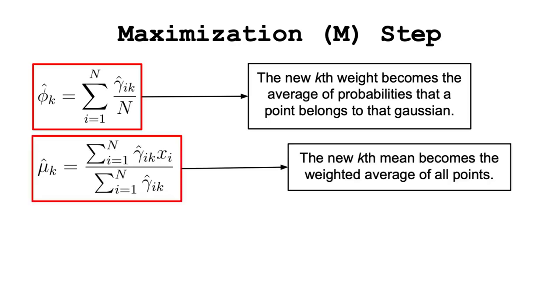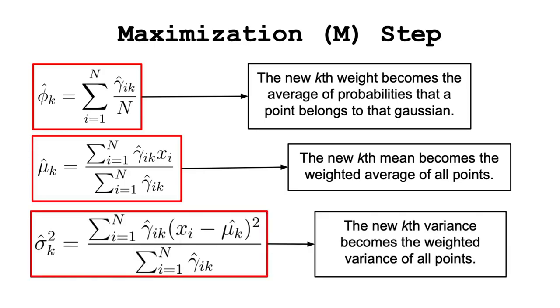Secondly, the mean of each Gaussian mu-hat k is calculated as the weighted sum by gamma i k of all points. Finally, we calculate the new variance in the same way as the weighted variance by gamma i k between each data point and the newly estimated mu-hat k.